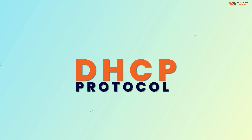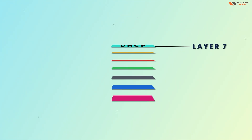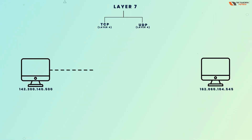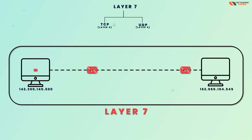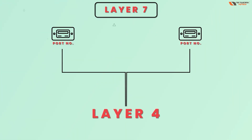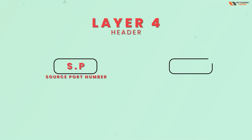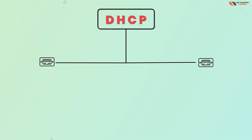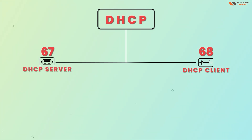Let's talk about DHCP protocol. This is a Layer 7 protocol, meaning it uses either TCP or UDP at Layer 4. Being a Layer 7 protocol, it uses port numbers. DHCP uses two port numbers: 67 and 68. Port 67 is for the DHCP server and port 68 is for the DHCP client.